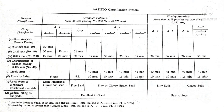If the parameters do not satisfy the first column, one enters the second column from the left and determines whether the parameters satisfy the limiting values in that column. This procedure is repeated for the next column until the column is reached where the known parameters satisfy the requirements, and the soil is classified as per the nomenclature given at the top of that column.